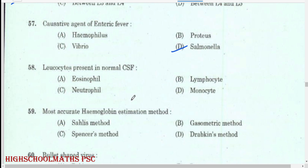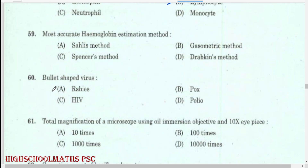Leukocytes present in normal CSF: lymphocytes. Most accurate hemoglobin estimation method: Drabkin's method.